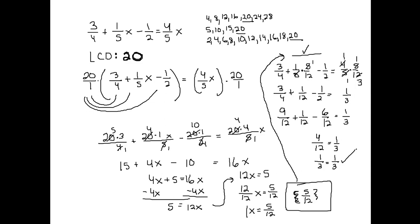If you want to eliminate decimals from an equation, look at each term and find which one has the most decimal places. Use a power of 10 with that many zeros — so two decimal places means multiply by 100, three decimal places means multiply by 1000 — and multiply both sides by that number. Or you can just solve it with the decimals directly.